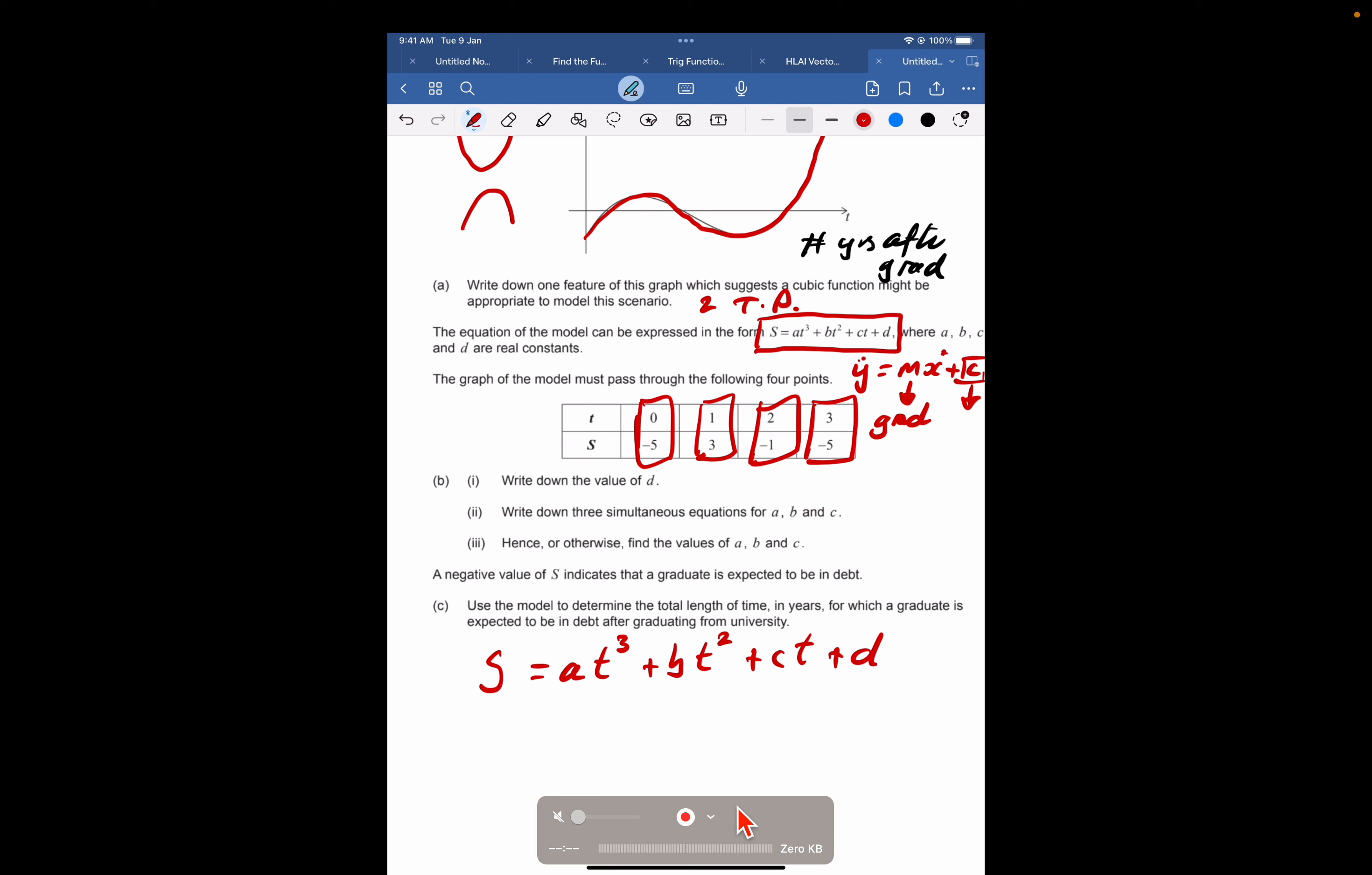Basically all we're going to do is we're going to substitute in pairs of TS numbers, XY coordinates. So I'm going to get four equations here. I'm just going to number these 1, 2, 3, and 4. I'm going to substitute T equals 0 and S equals negative 5. So negative 5 equals A times 0 cubed plus B times 0 squared plus C times 0 plus D. Negative 5 equals D. So that's why part 1 just says write down the value of D. So D actually is the y-intercept, and negative 5 is this cheeky little number here.